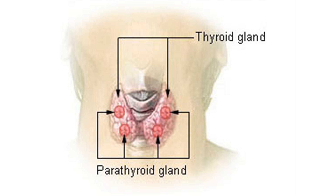This surplus stimulates the activity of osteoclasts, cells that break down bone, in a process known as osteoclastic bone resorption. The hyperparathyroidism can be triggered by a parathyroid adenoma, hereditary factors, parathyroid carcinoma, or renal osteodystrophy.